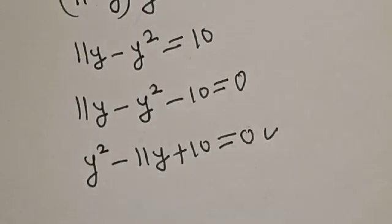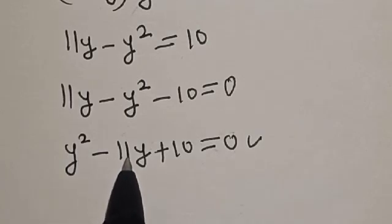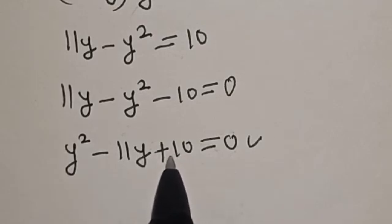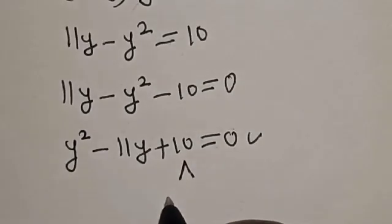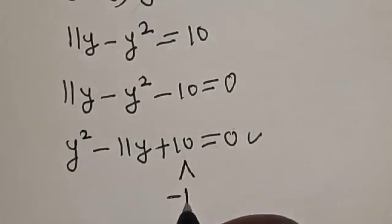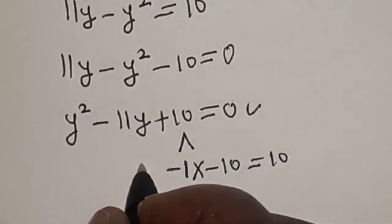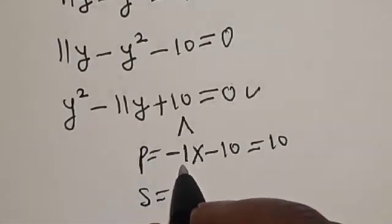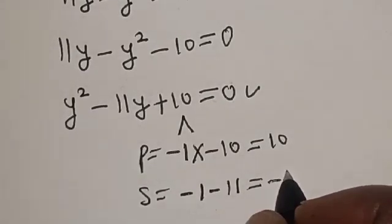This is a quadratic equation. The coefficient of y squared is 1, and the coefficient of y is minus 11. The constant is 10. We look for two numbers so that the product will give 10 and the sum will give minus 11. If we have minus 1 multiplied by minus 10, this is equal to 10 — that is the product. For the sum: minus 1 minus 10 is equal to minus 11.